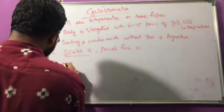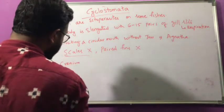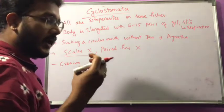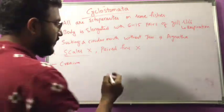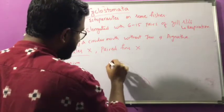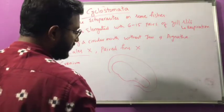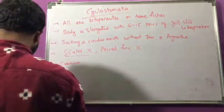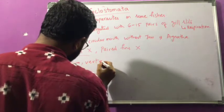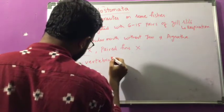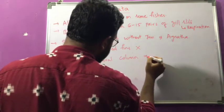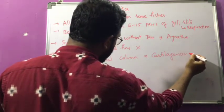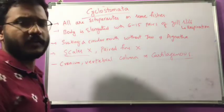The cranium — also known as the brain box — is the bony material that protects the brain. The cranium and the vertebral column, that is the backbone, are cartilaginous here. That means they are not made up of bone but of cartilage, which is a soft material.